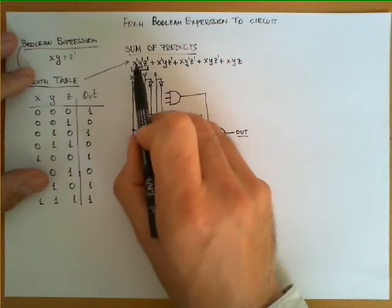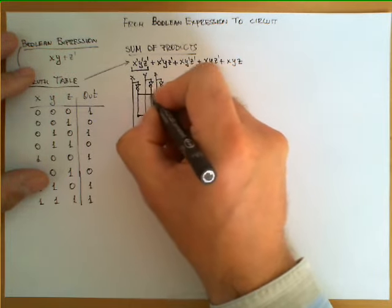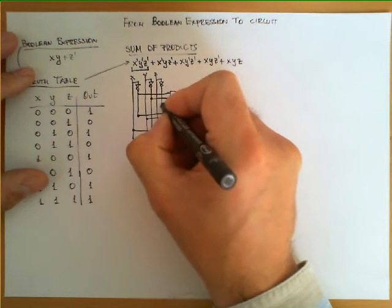And finally this term is x prime which means I have to connect the three inputs of this gate to the three lines that come out of the inverters.